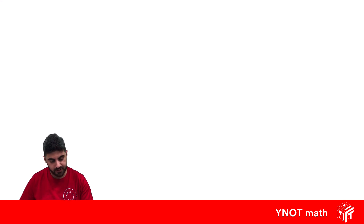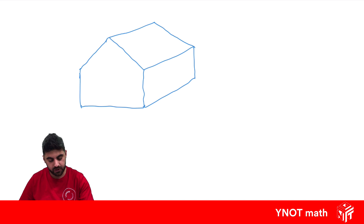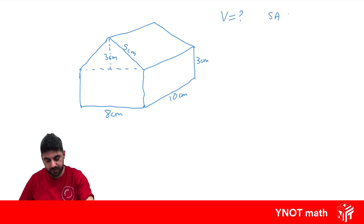Let's have a look at an example. We've got a rectangle with a triangle on top, and let's make it a 3D shape extending it back — so we really have a rectangular prism with a triangular prism on top. The dimensions are 8 centimeters, 10 centimeters, and 5 centimeters, with a height of 3 centimeters for both the rectangle and the triangle.